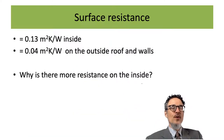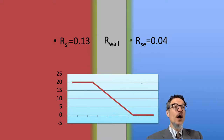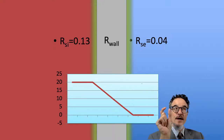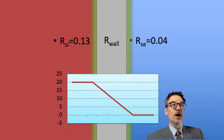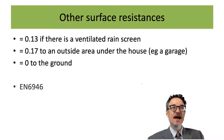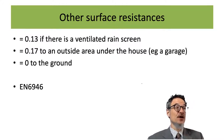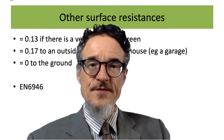If we have a real wall — thicker than paper with some R-value — we have three layers: the inside surface resistance, the wall itself, and the outside surface resistance. We add up these resistances. If there's a ventilated air screen the resistance is slightly better; if the house is on the ground there's no surface resistance and heat will conduct directly. There are slightly different surface resistances for different situations.